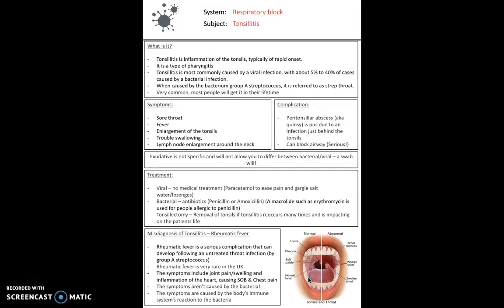So tonsillitis is something else we've talked about. This is inflammation of the tonsils. It's quite a common thing. A lot of people really do suffer from tonsillitis, particularly when they're children. It's a type of pharyngitis. So it's usually caused by a viral infection. However, it can be bacterial as well. And when caused by the bacteria in group A streptococcus, it's referred to as strep throat. So this was mentioned in the previous video. Strep throat is inflammation of the throat caused by group A streptococcus. So it's very common. A lot of people will get it within their lifetime. It causes a chronically sore throat, fever, enlargement of the tonsils, and as well, difficulty in swallowing.